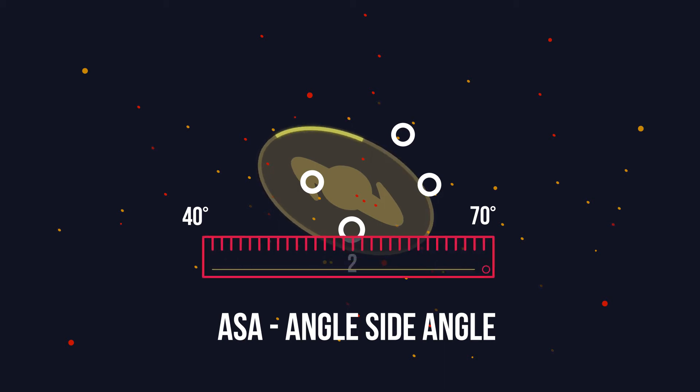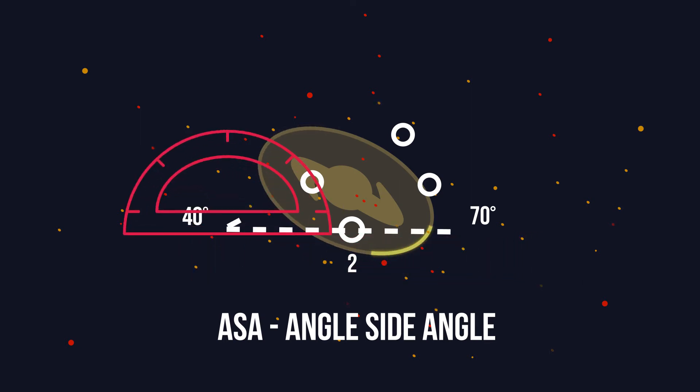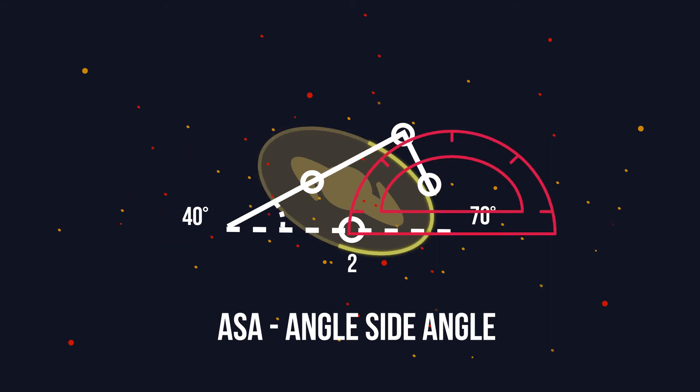So start by drawing the line of length 2 with a ruler. And then using a protractor measure the 40 degree angle at one end and the 70 degree angle at the other end. And where these two lines cross give you the triangle.